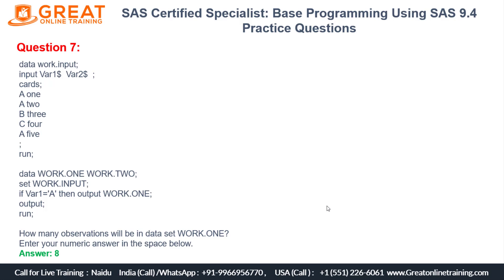The OUTPUT statement is duplicating the data — five existing observations plus three more equals eight. For work.two, we are not doing anything special in the code, so it automatically copies the input dataset as-is. That means work.two has five observations, both before and after. So the final answer: work.one has eight observations.